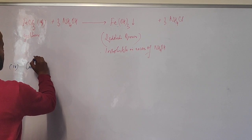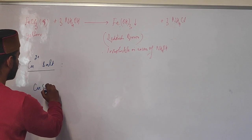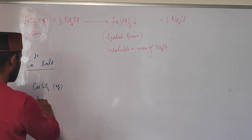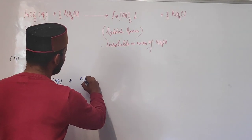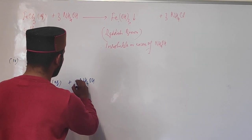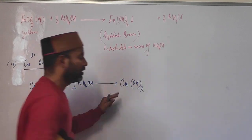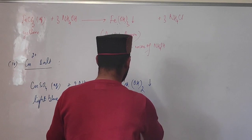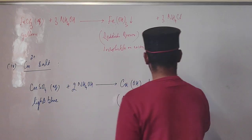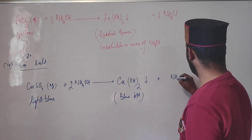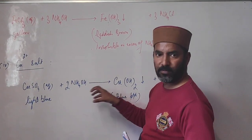Next, we discuss copper(II) salts Cu²⁺. Take copper sulfate — its aqueous solution is light blue. When we add ammonium hydroxide in small quantity, the copper ions get precipitated as copper hydroxide Cu(OH)2, giving a blue precipitate. Ammonium sulfate remains in solution.